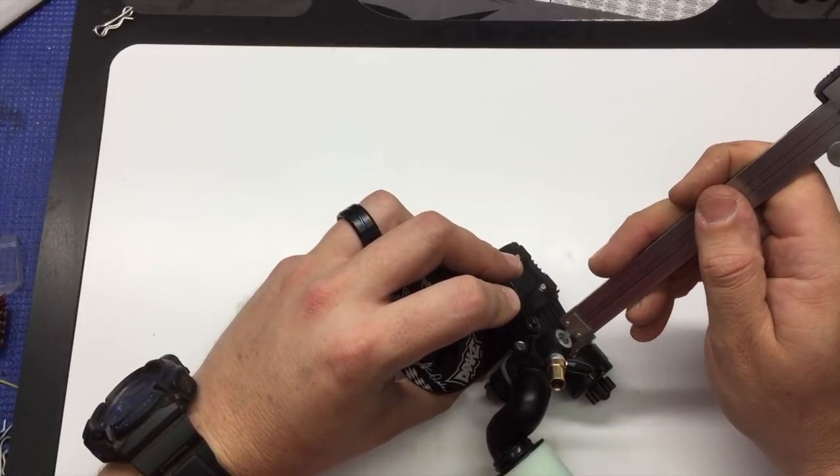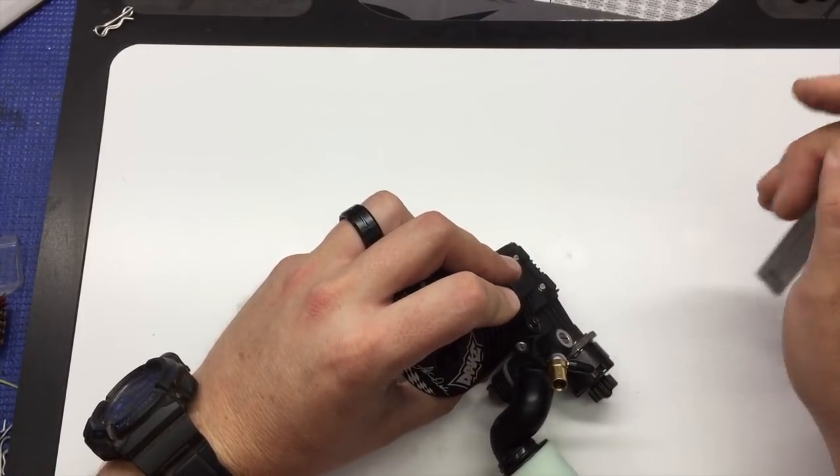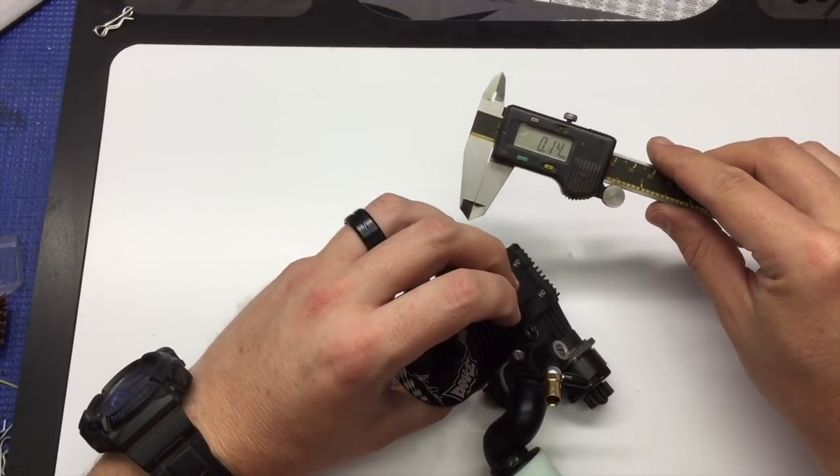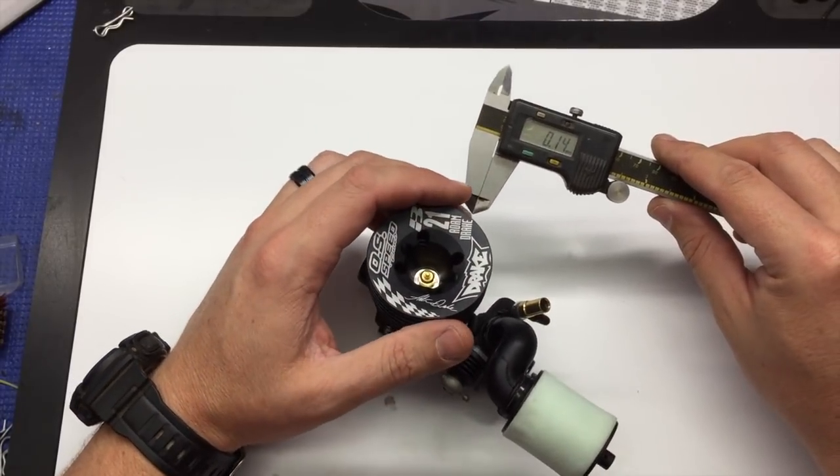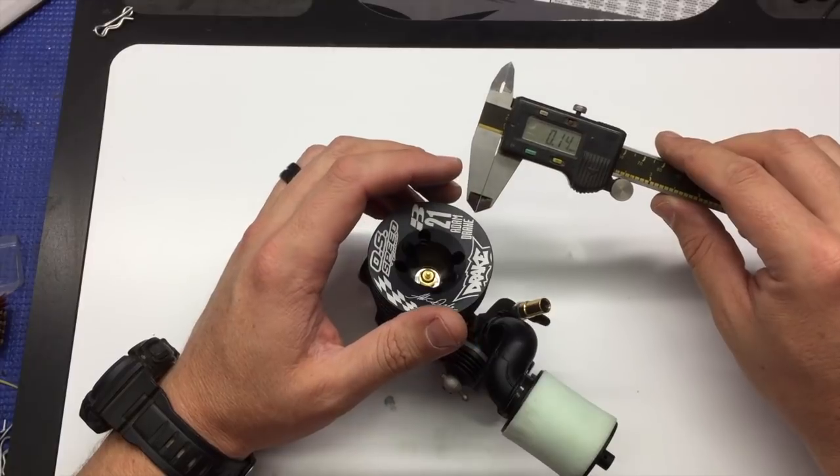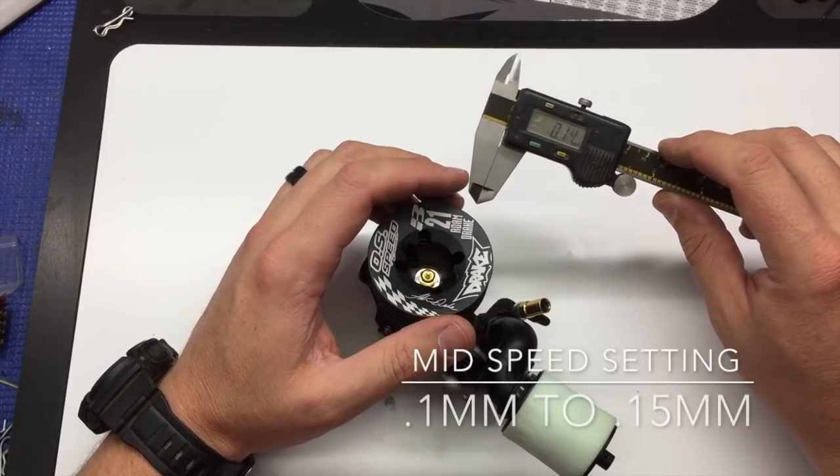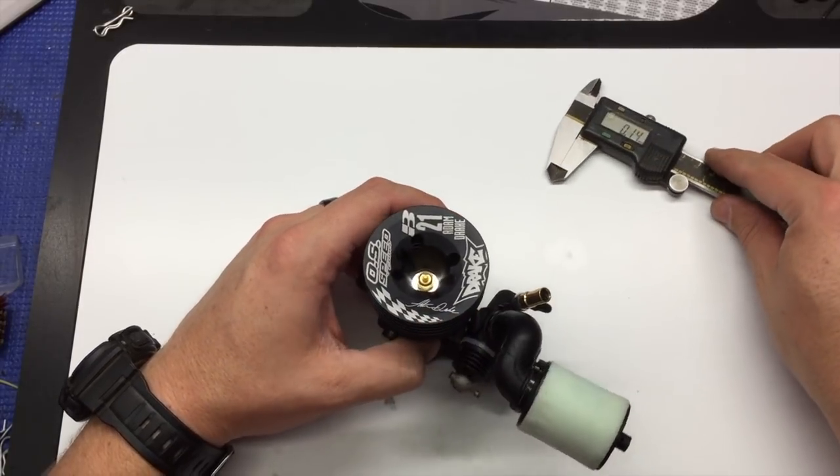And then for the mid-speed, we're at .14. So usually with the mid-speed, I'm anywhere from flush to .15 of a millimeter in from flush for the 21J carburetor.